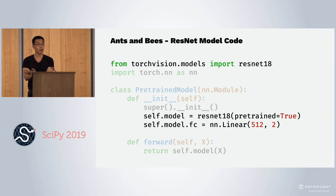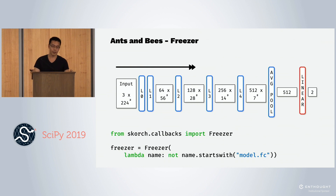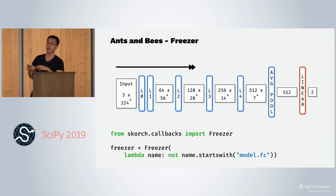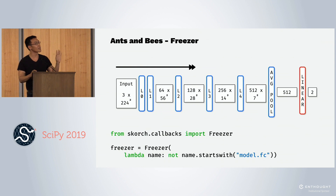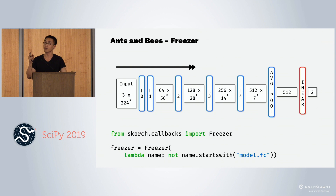To do fine-tuning on this model, we have to freeze the layers before the final layer. Scorch provides a callback to do this called the Freezer. We freeze everything that does not start with the name model.fc, because the final layer has the name model.fc. This freezes everything in blue and leaves the layer in red open to update its weights.